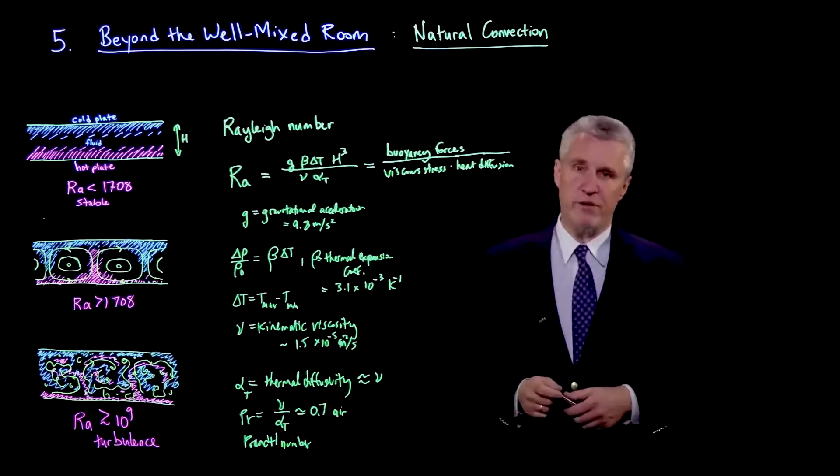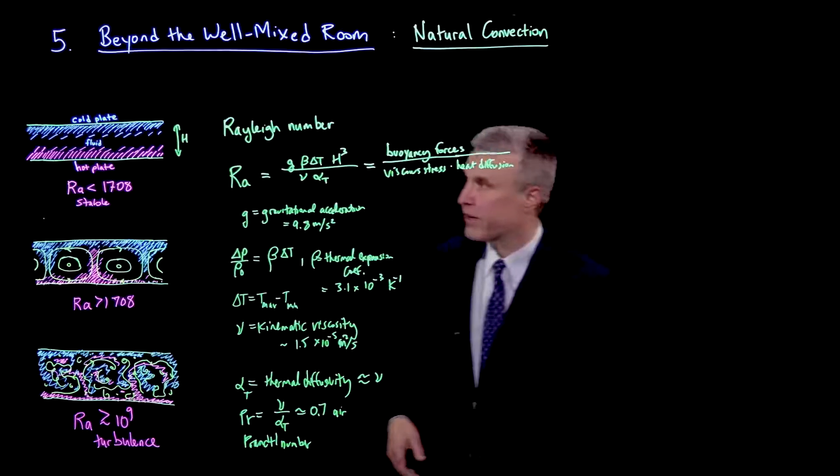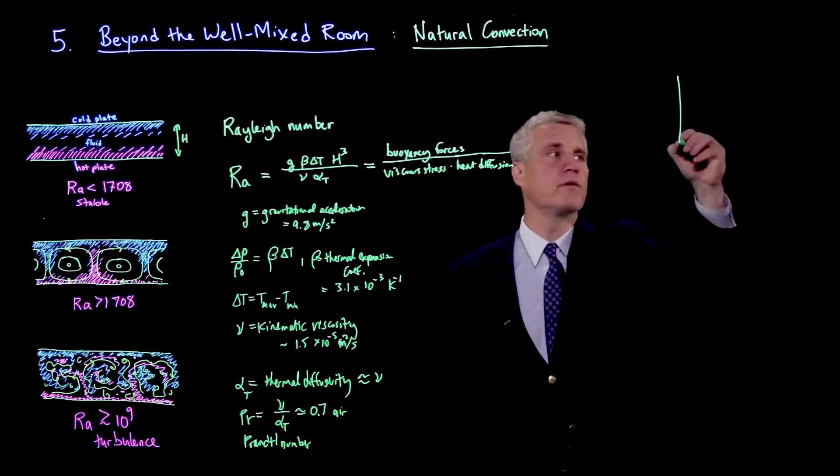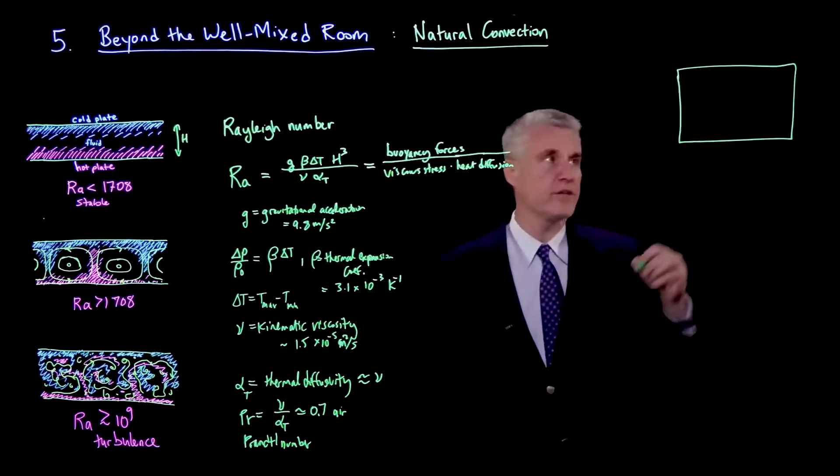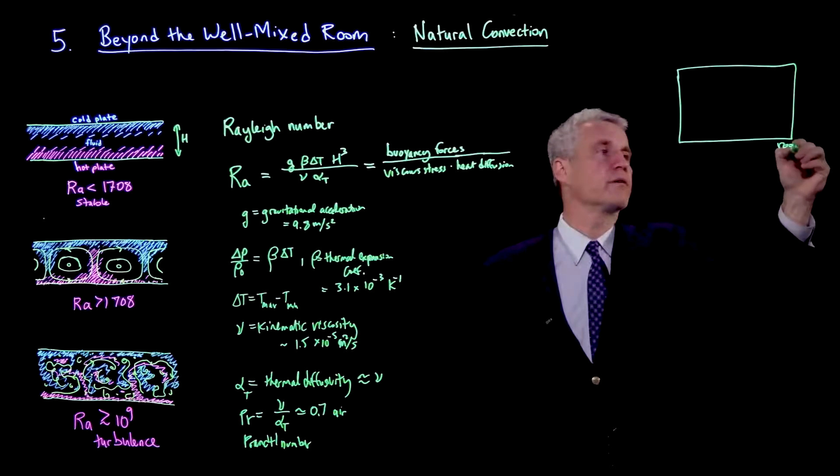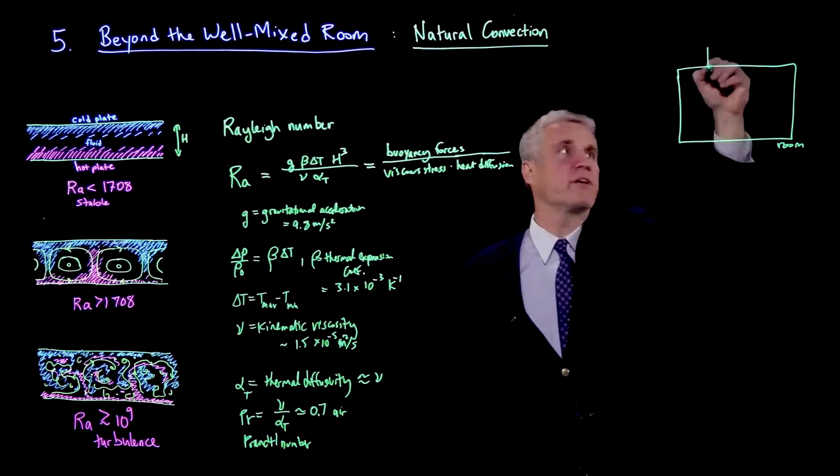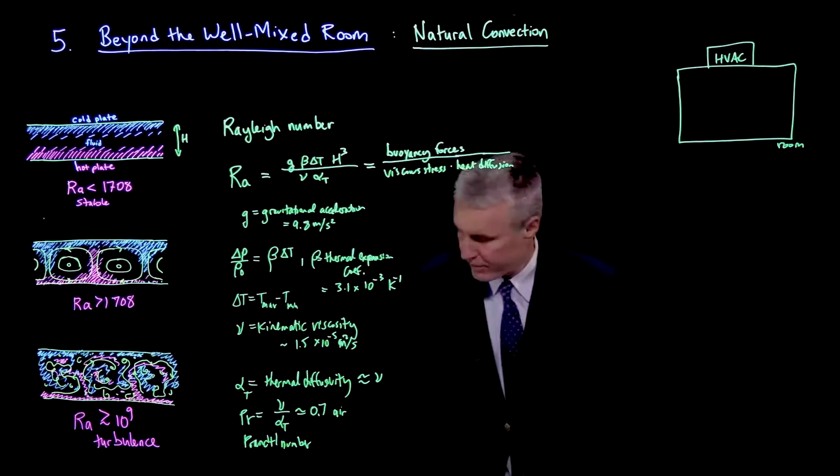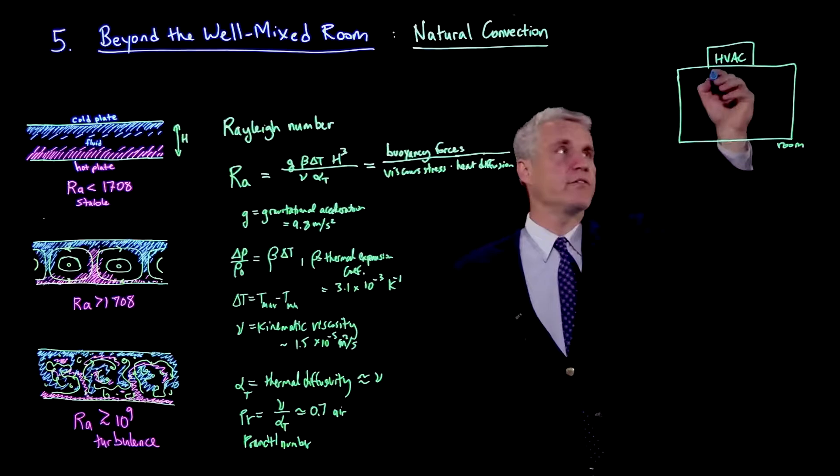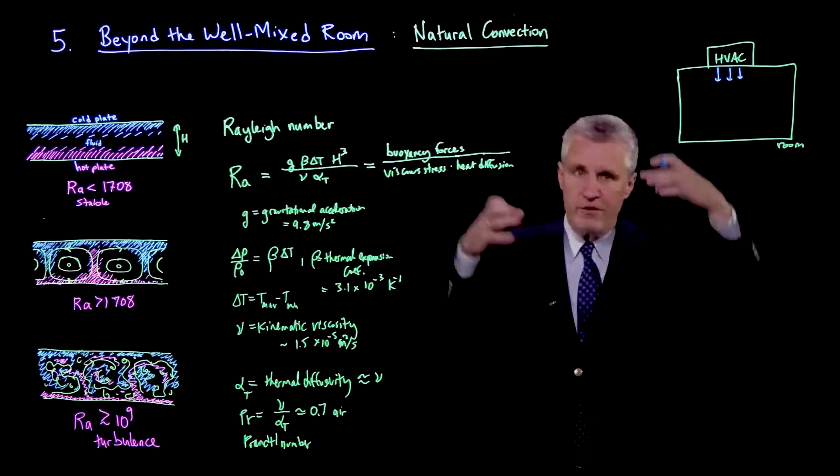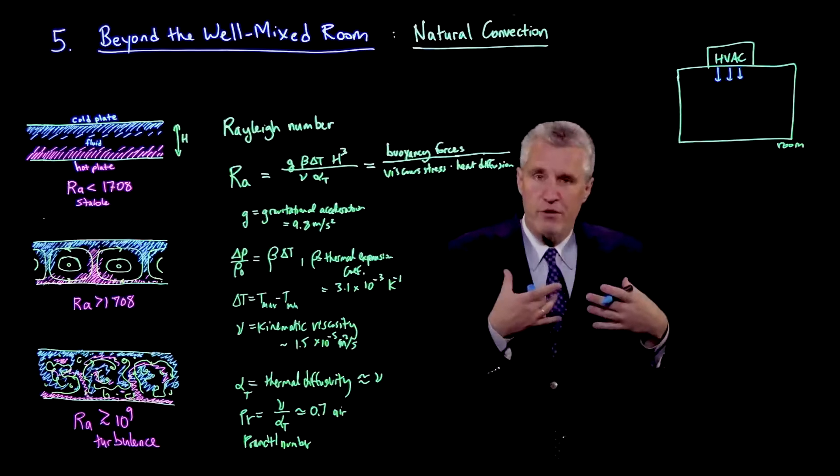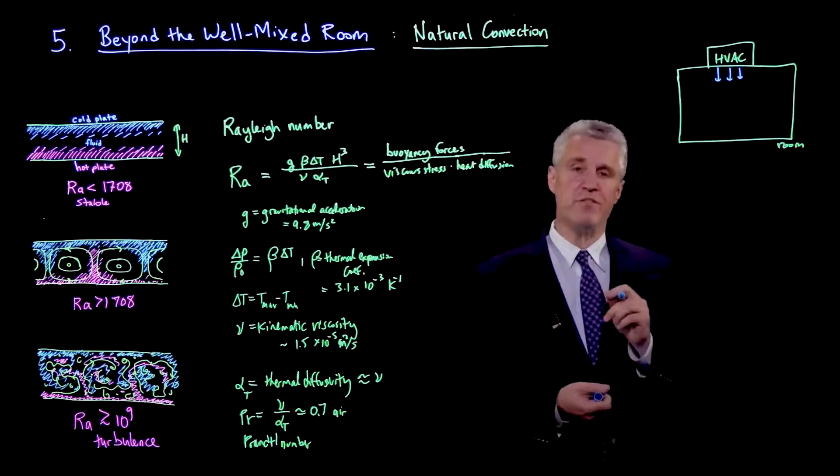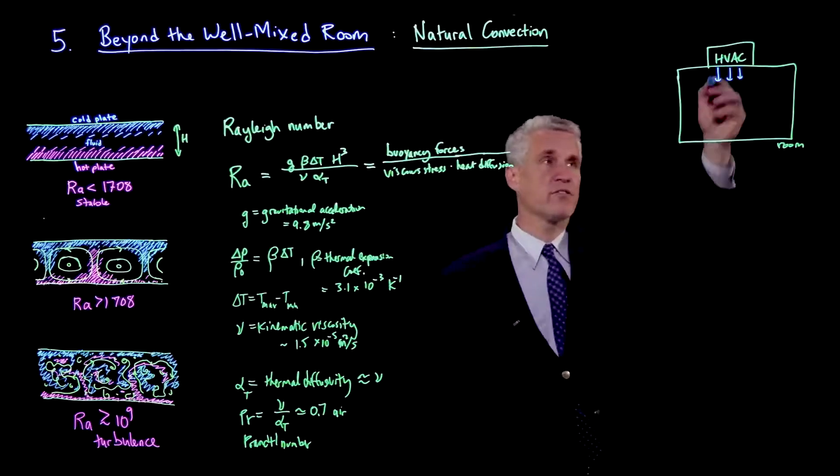Let's see how big the Rayleigh number is in different situations of interest for indoor air. If we look in a room, let's imagine we have our heating and ventilation air conditioning - let's say it's an air conditioning unit on the top which is dumping in some cold air and giving it some velocity. The velocity is associated with a Reynolds number. That inertia will lead to destabilization and vortices and mixing by itself. But let's see what the effect is of the temperature difference.